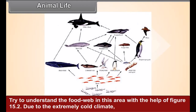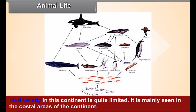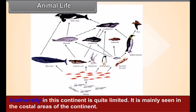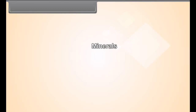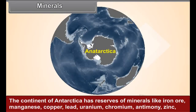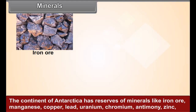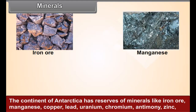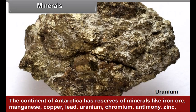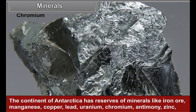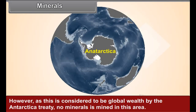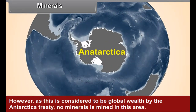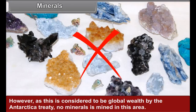Due to the extremely cold climate, biodiversity in this continent is quite limited. It is mainly seen in the coastal areas. The continent of Antarctica has reserves of minerals like iron ore, manganese, copper, lead, uranium, chromium, antimony, zinc, gold, etc. However, as this is considered to be global wealth by the Antarctica Treaty, no mineral is mined in this area.